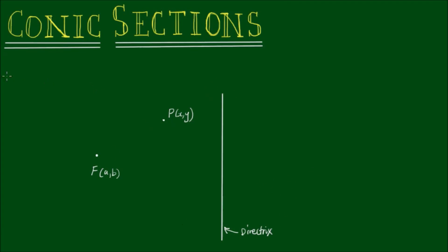These three items are all I need to construct the conic sections, which are going to be: one, the ellipse; two, the parabola; and three, the hyperbola.